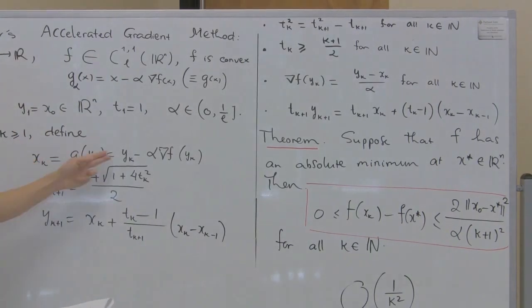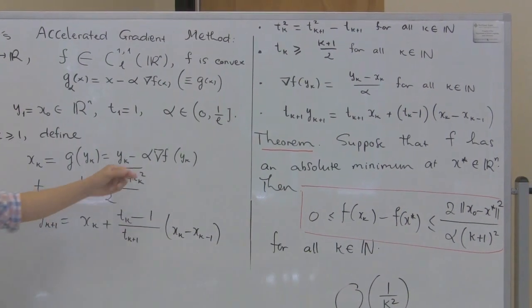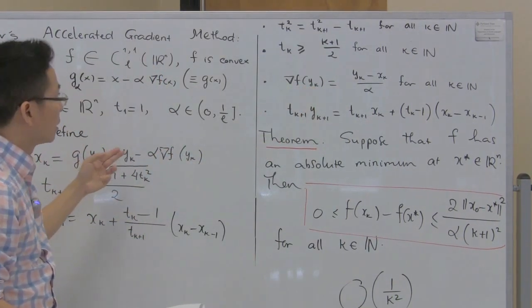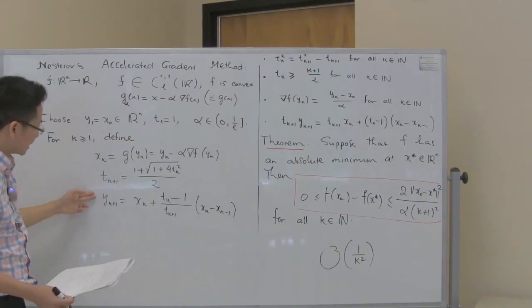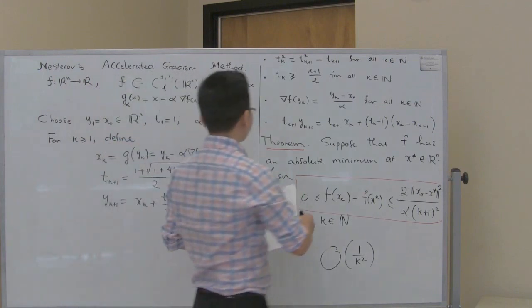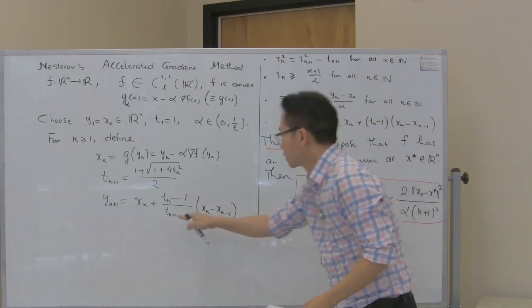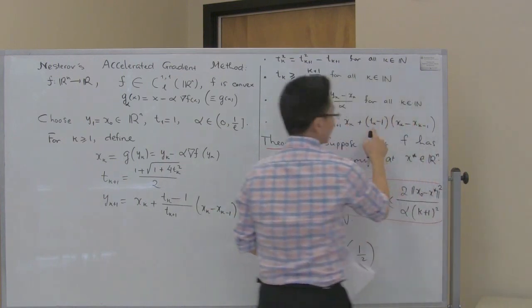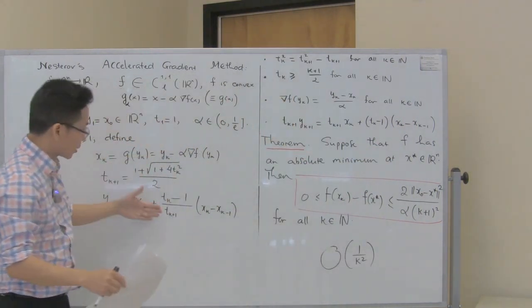From the relation x_k = y_k minus alpha times the gradient of f at y_k, we can solve for the gradient: it is (y_k - x_k) / alpha. Multiplying both sides by t_{k+1}, we get that t_{k+1} times y_{k+1} equals t_{k+1} times x_k plus (t_k - 1) times (x_k - x_{k-1}).